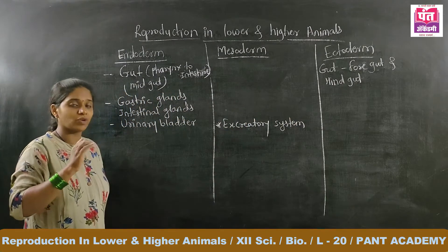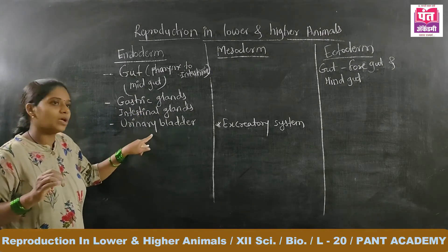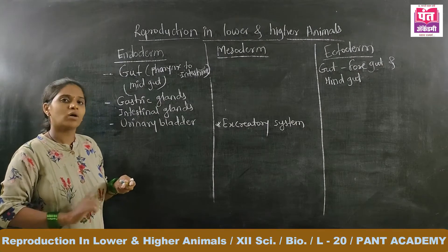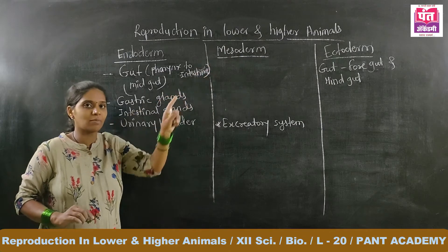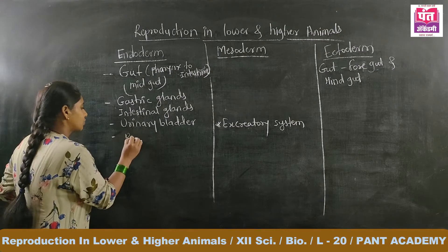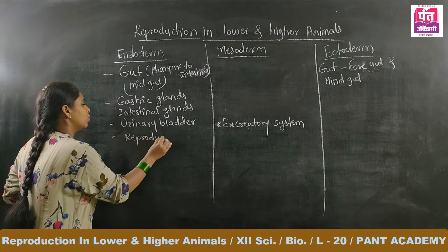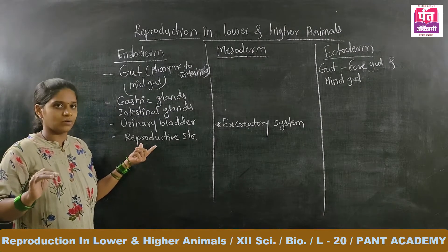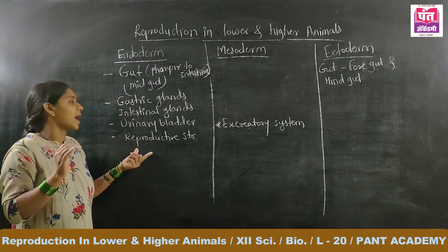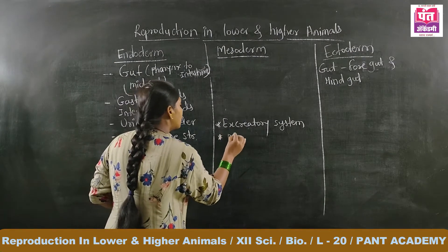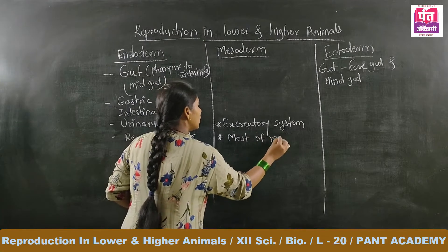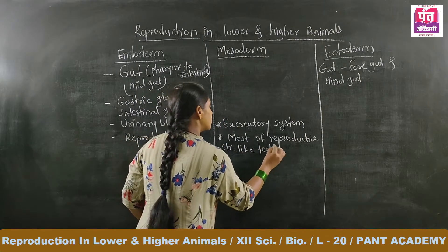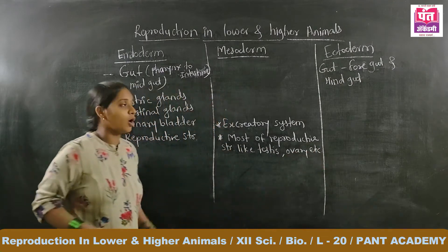These points are very important to keep in mind. The urinary bladder is made up of endoderm, but the remaining excretory system — kidneys, ureters, and urethra — are made up of mesoderm. Regarding the reproductive tract: most reproductive structures, like testes and ovary, are made up of mesoderm, while only a few reproductive structures are made up of endoderm.